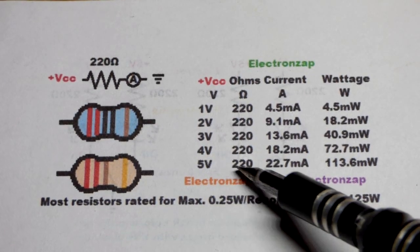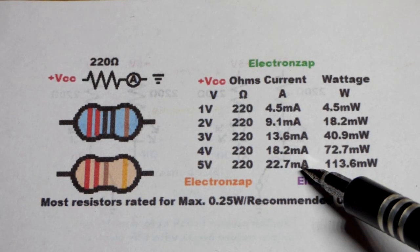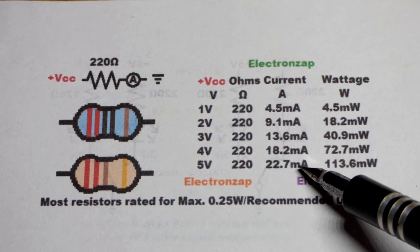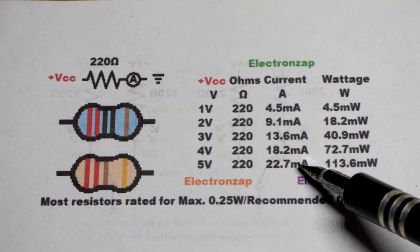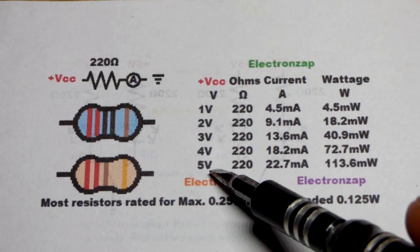If we put 5 volts across a 220 ohm resistor, we can expect about 22.7 milliamps of current to flow through the resistor. So that's high for an LED if you are using the resistor to protect the LED.